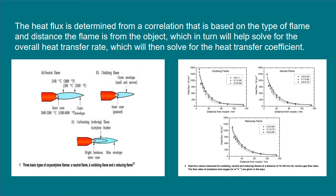For our experiment, the heat flux is determined from a correlation based on the torch we will be using. The torch uses an oxidizing flame, shown in the left figure. We'll be using figure B, which is based on the type of flame and the distance the flame is from the material.